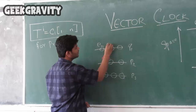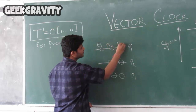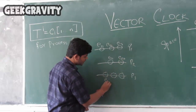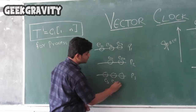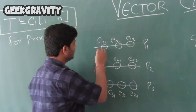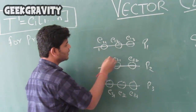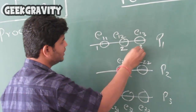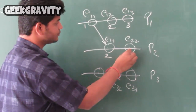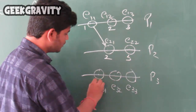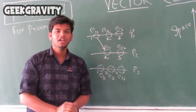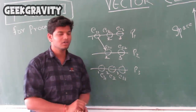Let us label the events P11, P12, P13, P21, P22, P31, P32, P33. Now let us suppose the timestamps. The timestamps for this process will be 1, 2, 3 and for P2 it will be 2 and 3, and for P3 it will be 1 and 3. If you want to refer to how these timestamps came, you can refer to our previous video on logical clock and Lamport clock.